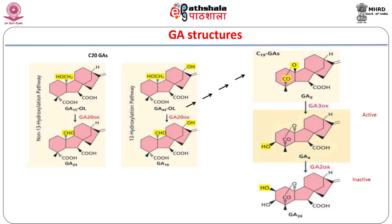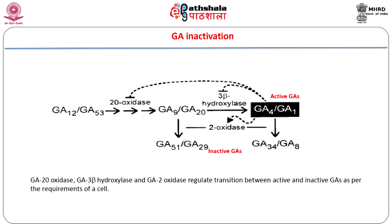Further oxidation leads to the 3-carbon hydroxylated products GA1 and GA4. Presence of the lactone ring and hydroxylation at the third carbon are important steps which lead to formation of bioactive GAs. On the other hand, hydroxylation at the second carbon converts the bioactive GAs to inactive forms, namely GA34 and GA8. GA activity is therefore regulated by the expression and activity of three oxidases: GA20 oxidases, GA3 oxidases, and GA2 oxidases.